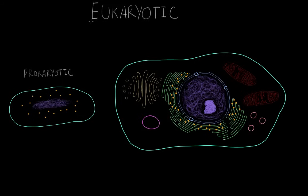Eukaryotic cells are usually much larger than prokaryotes, and eukaryotic cells are also found in multicellular organisms, although there are single-cellular eukaryotes, such as certain protists. But what are the defining characteristics that make a cell eukaryotic?